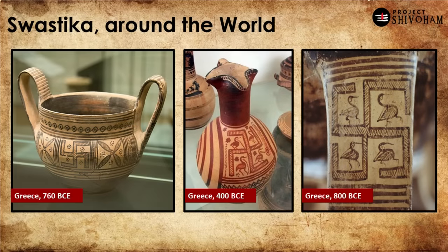A very interesting thing with swastika is that it is one of the oldest symbols which has been continuously in existence for thousands of years. Take a look at the pottery here, which is from Greece — 760 BC, 400 BC, 800 BC — that's almost 3,000 years from now. If you observe the way these symbols are hand-painted thousands of years ago, the symbol took center stage in the aesthetics of that pottery. The painting of swastika on these pottery is clearly intentional, and the maker really wanted it in the center, taking the center stage.